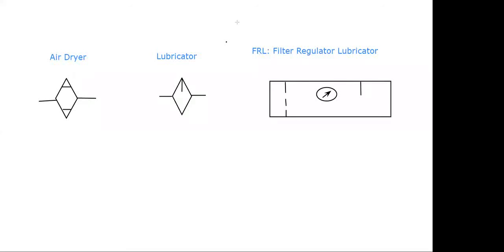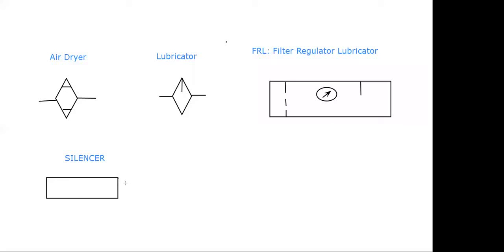The symbol for silencer is like this. A silencer is used to make the system quiet. While working with a pneumatic system, there is a sound of air flow which is irritating. To eliminate this sound, we use the silencer. The function of the silencer is to make the operation of the system quiet.